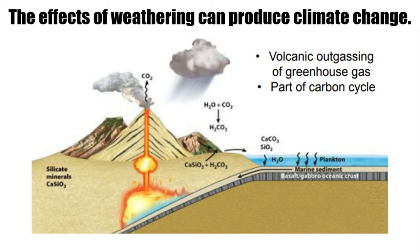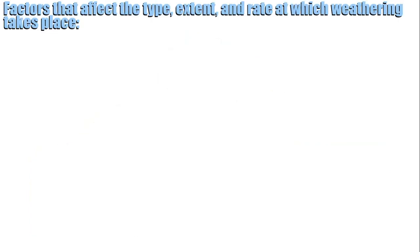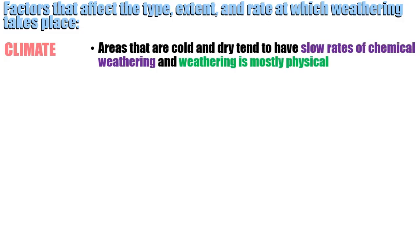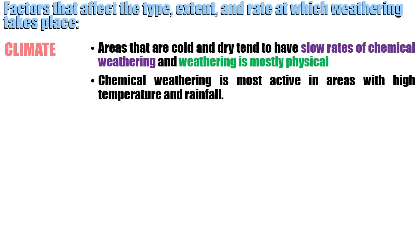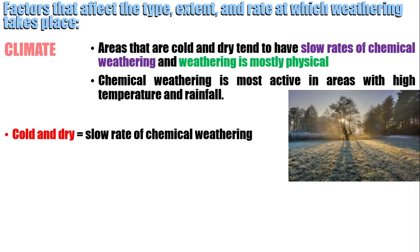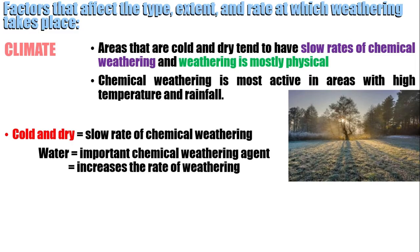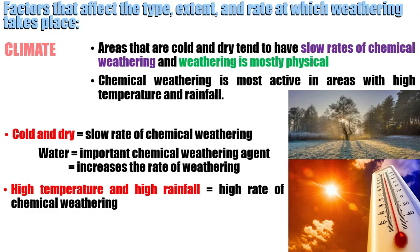This slide shows the effects of weathering, which can lead to climate change. Now let's talk about the factors that affect the type, extent, and rate at which weathering takes place. The first factor is climate. Areas that are cold and dry tend to have slow rates of chemical weathering, so weathering is mostly physical there. Chemical weathering is most active in areas with high temperature and rainfall. Water is the most important chemical weathering agent because it increases the rate of weathering.